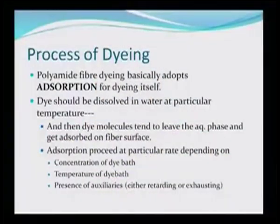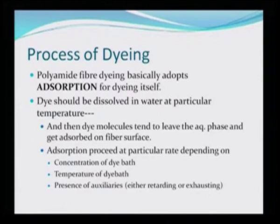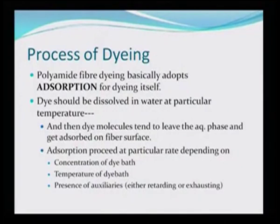The process of polyamide fiber dyeing basically adopts adsorption. With the help of adsorption on the fabric surface, dye should be dissolved in water at a particular temperature, and then dye molecules tend to leave the aqueous phase and get adsorbed on the fiber surface. This is a function of surface adsorption. The adsorption proceeds at a particular rate depending on the concentration of the dye bath, the temperature of the dye bath, and the presence of auxiliaries — either retarding or exhausting agents.